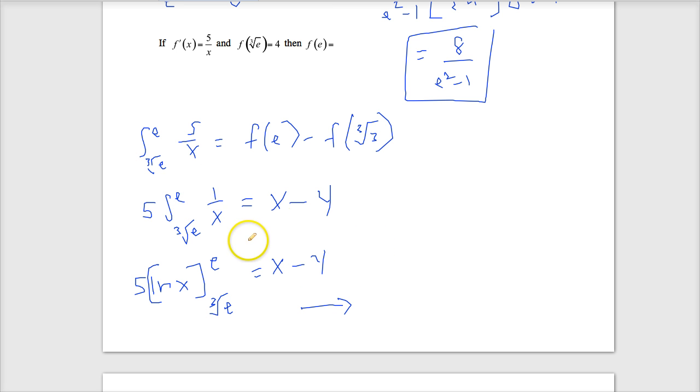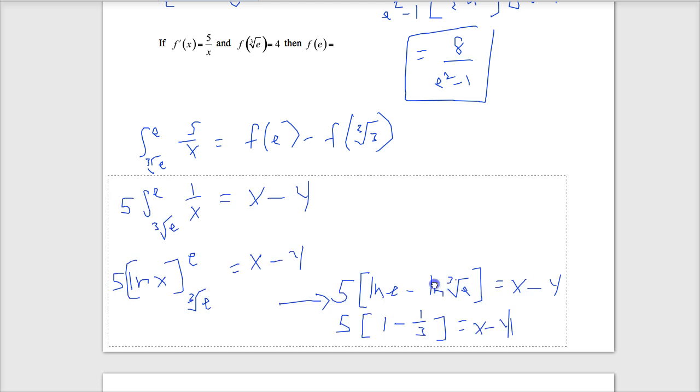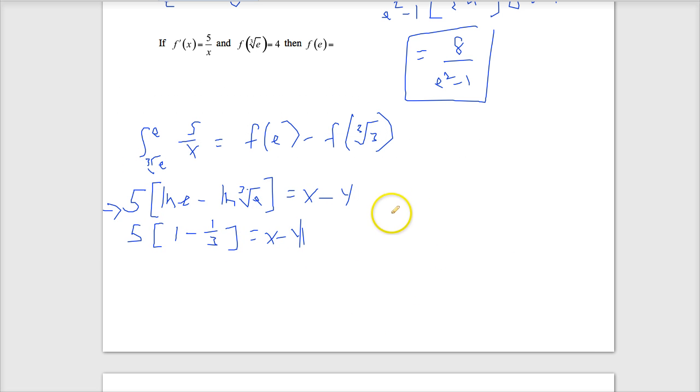You can also put this antiderivative in your calculator also. But it's going to be 5 ln e minus ln cube root of e. Again, I know this already, so ln of e is 1. And then ln of the cube root of e is 1 third. So this is just 2 thirds or I get 10 thirds. So this becomes 10 thirds equals x minus 4. And then when I add 4 to both sides, this is the same thing as 12 over 3. The answer is going to be 22 over 3.